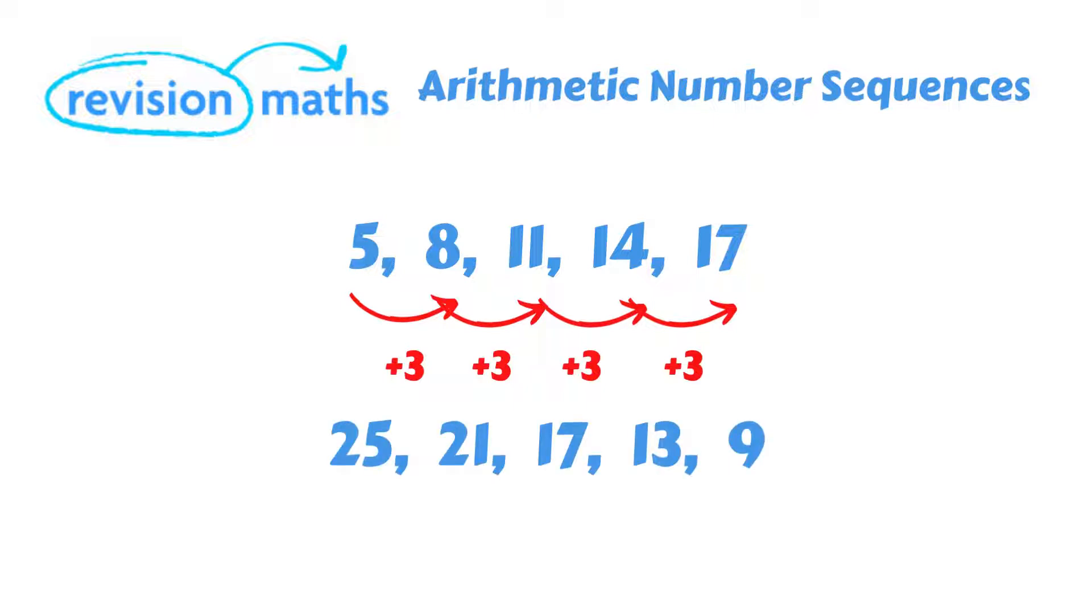To give you another example, I'm going to show you another number sequence. This sequence contains the terms 25, 21, 17, 13 and 9. If we go along the sequence, we can see the difference between each term is minus 4. So the pattern for this sequence is subtracting 4.